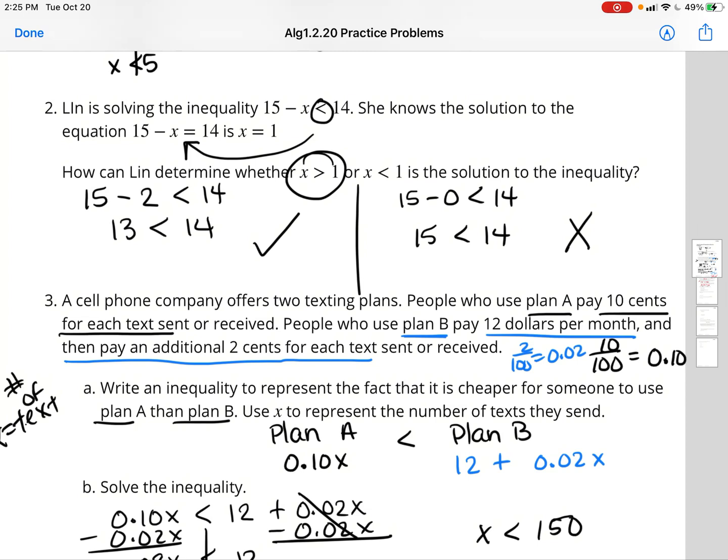So she solved this out and she got x equals 1. And to check this, I want to do this both ways. Is it going to be greater than 1 or less than 1? I know that a number greater than 1 is 2, so I'm going to plug in 2. 15 minus 2 should be less than 14. 13 is less than 14, so that works. x is greater than 1 works.